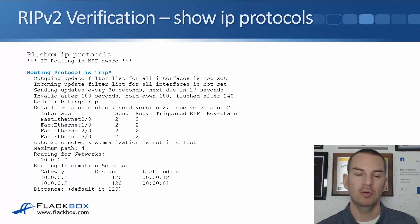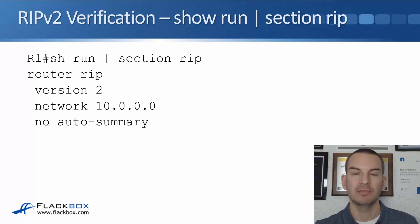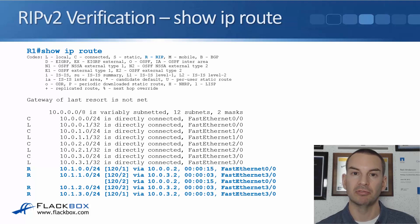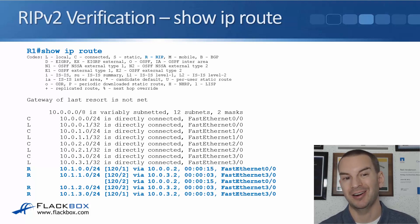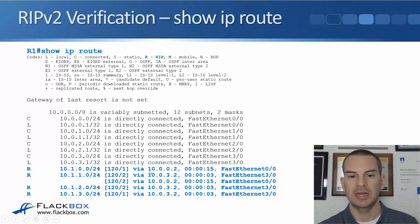The distance shown is the administrative distance, which defaults to 120 for RIP. To see just the RIP configuration, you can do 'show run | section rip' rather than scrolling through the entire config. Once RIP is configured, use 'show ip route' to check for RIP routes in the routing table. Routes marked with R were learned by RIP, showing administrative distance 120, the metric in hop counts, the next-hop address, last update time, and the outgoing interface.